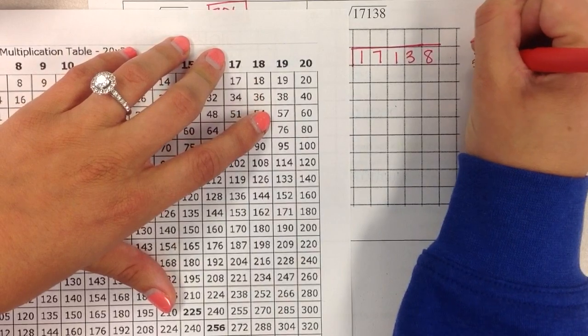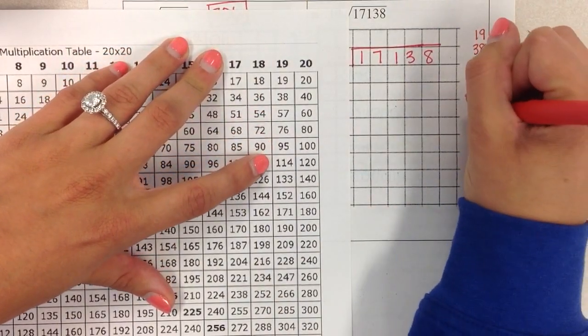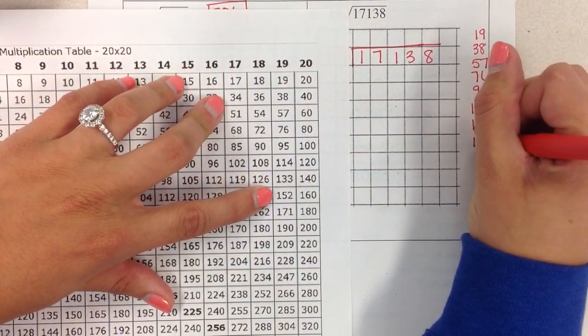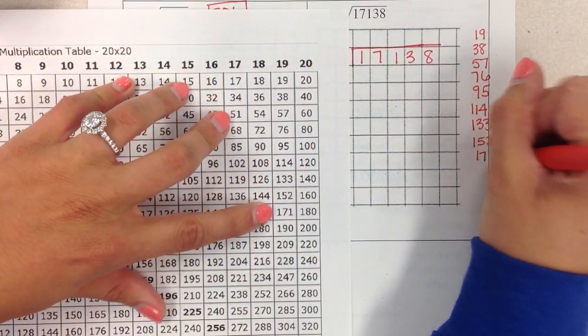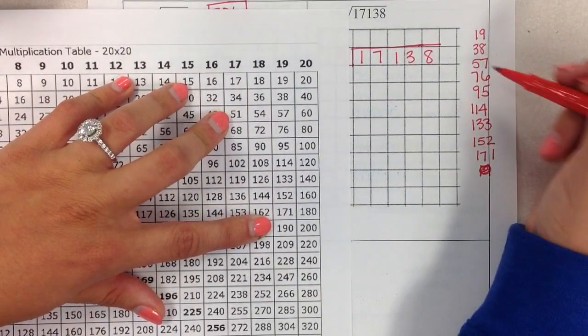So I'm going to write on the side here using my chart. 19, 38, 57, 76, 95, 114, 133, 152, 171, 190. Nope, don't need that. That's too big. So we have our first 9.